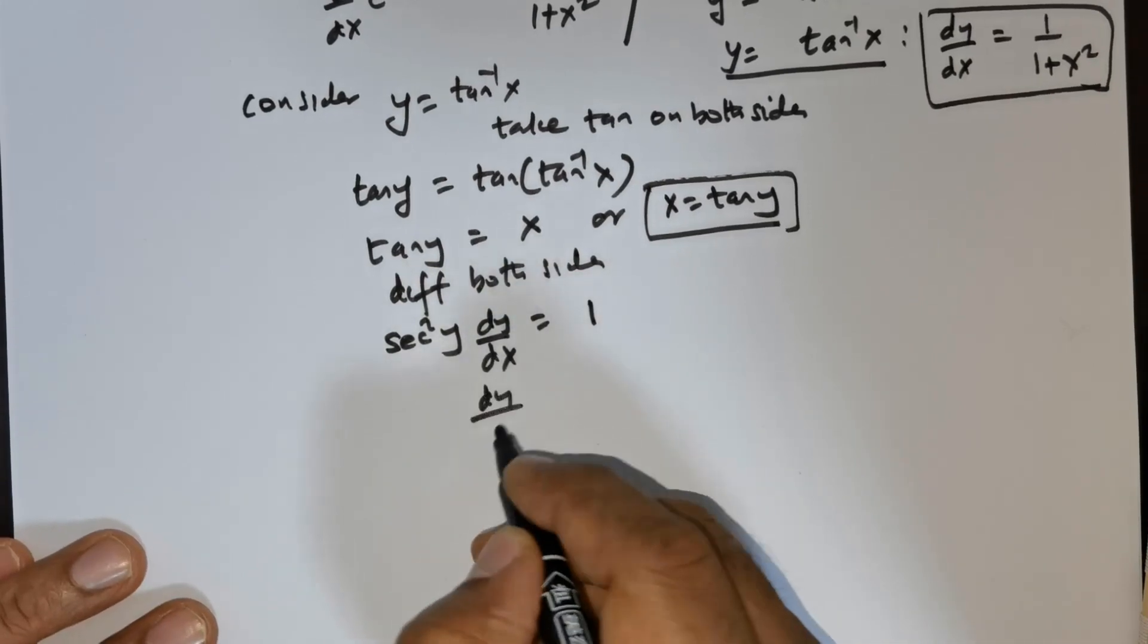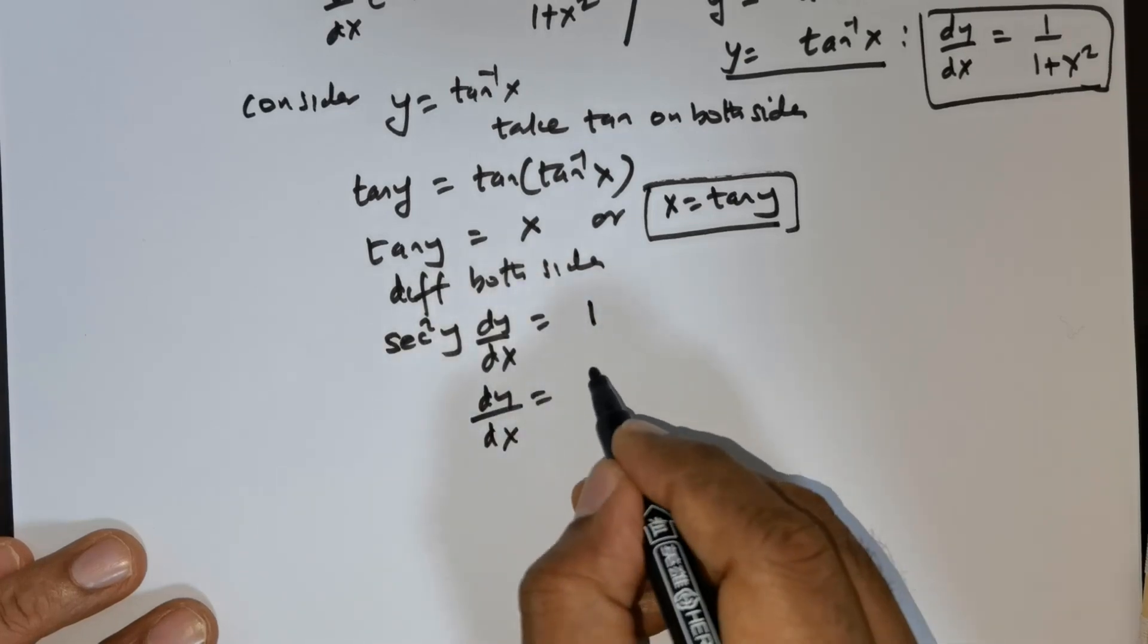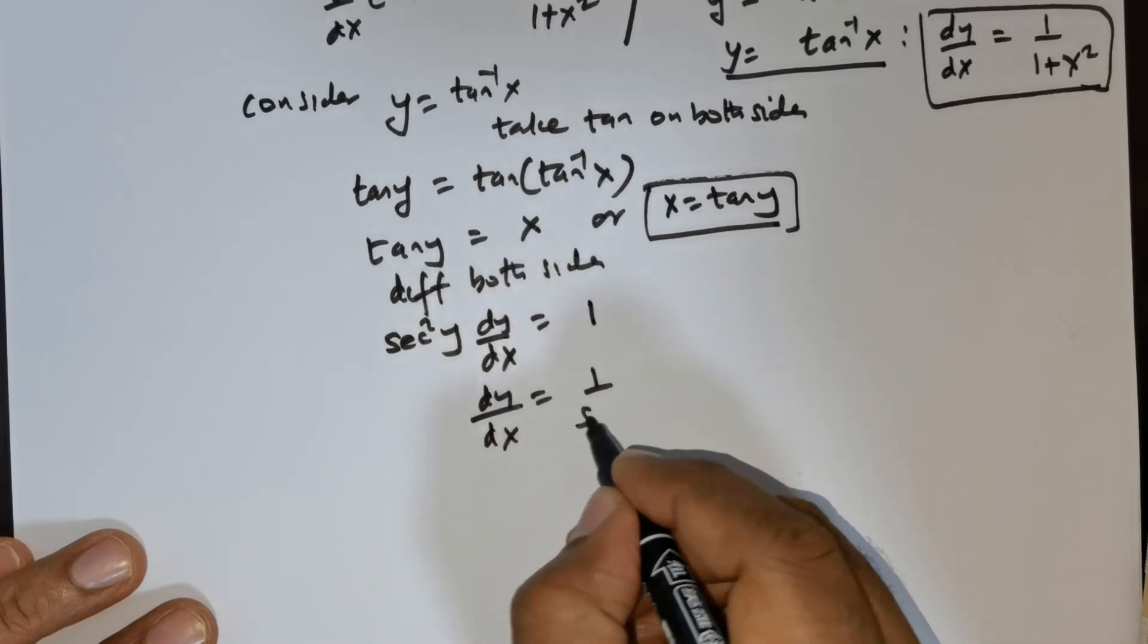Now I can retain dy/dx on one end and I can push secant squared y down.